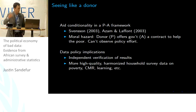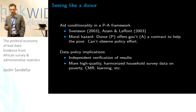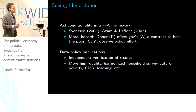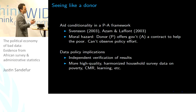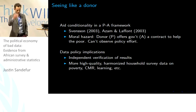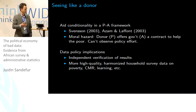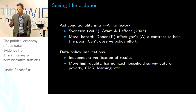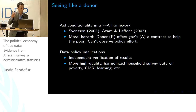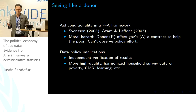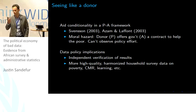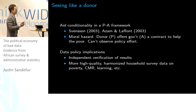Looking at seeing like a donor — a series of papers from the twilight of the popularity of conditionality in aid programs. Svensson in 2003 and Azam and Lafont in the Journal of Development Economics in 2003 present aid conditionality in a principal-agent framework — a simple moral hazard model where the donor P offers the recipient country government A a contract to help the poor, but they can't observe the policy effort, so we end up with a moral hazard problem. This demands independent verification of results. You can't just rely on the agent's self-report; you need independent verification.